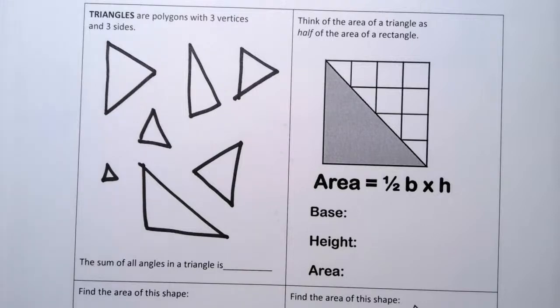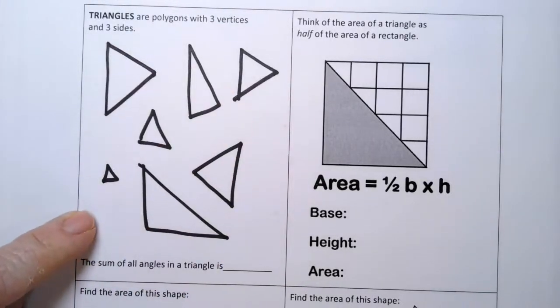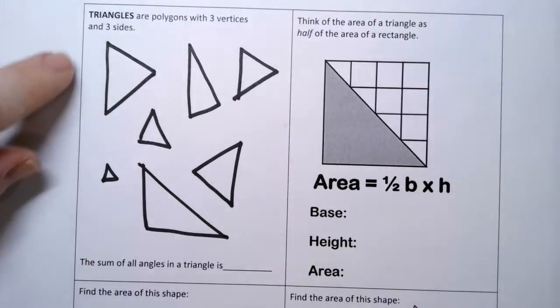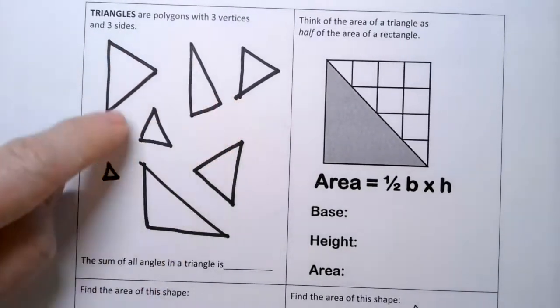Most people think of those as polygons. A circle is not a polygon because it doesn't have any points and it doesn't have any straight sides.